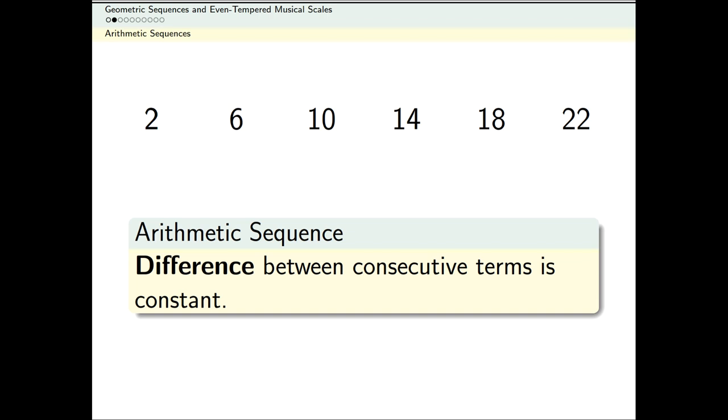A sequence like this is called arithmetic. If I take any two terms that are next to each other, subtract them, I'm going to get the same number.